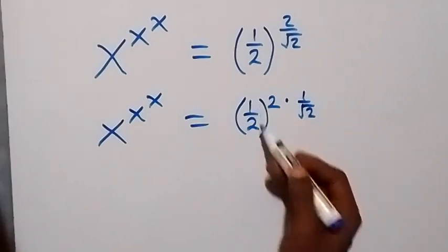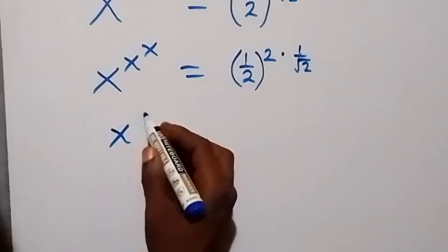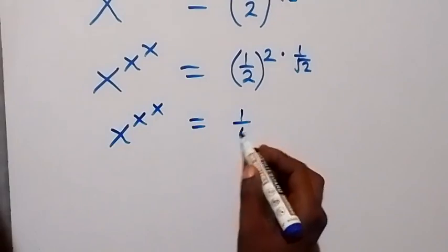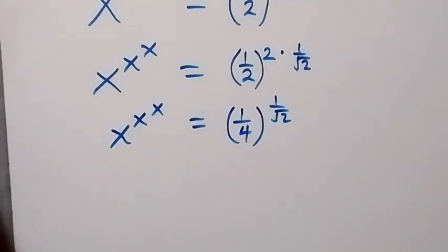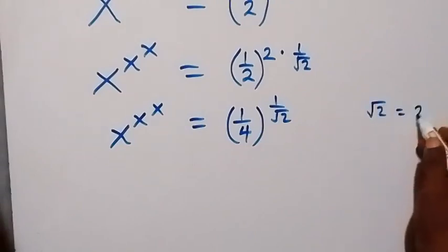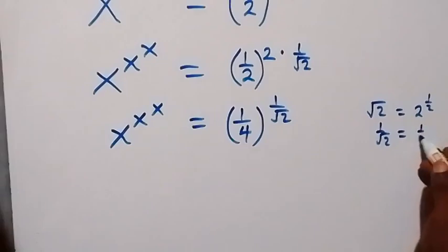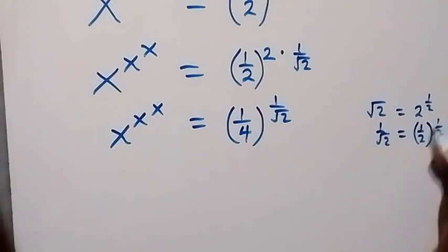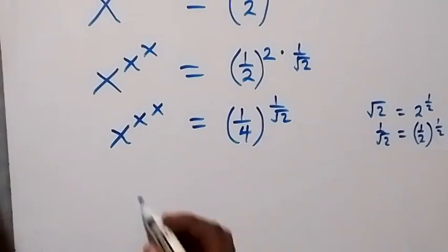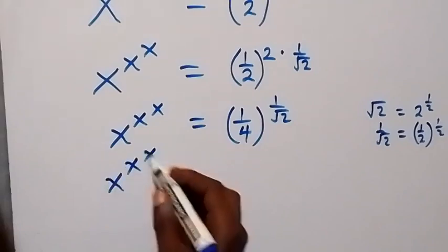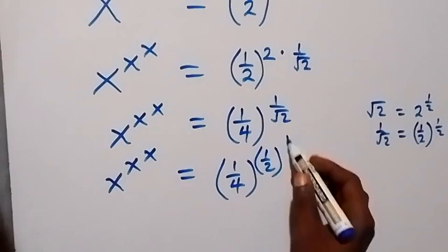When we square this, 1 squared is 1 and 2 squared is 4, so this gives us x raised to power x raised to power x, equals 1 over 4, raised to power 1 over root 2. Since root 2 equals 2 raised to power half, we can write 1 over root 2 as 1 over 2 raised to power half. So this becomes x raised to power x raised to power x raised to power x, equals 1 over 4, raised to power 1 over 2, raised to power 1 over 2 again.